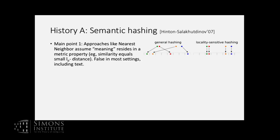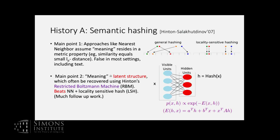The first main point — and this relates to discussions in some of the morning talks — is that approaches like nearest neighbor, which are very popular in theory, assume that the meaning of whatever object you're looking at resides in a metric property: points in similarity equals small L_p distance. And this is false in most settings, including text, as we saw in the previous example.